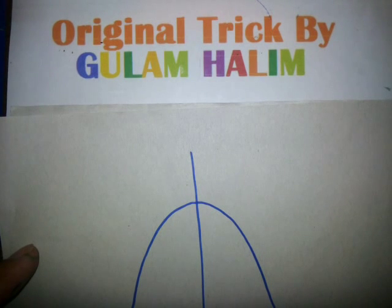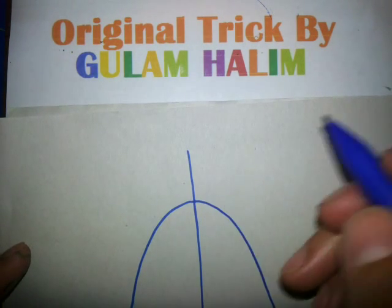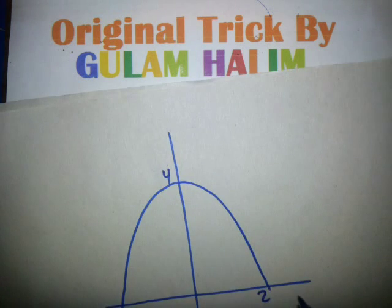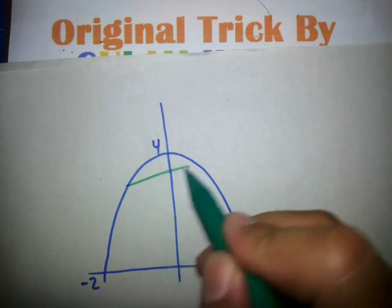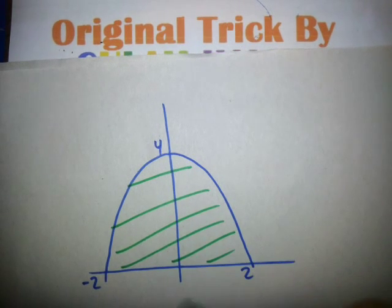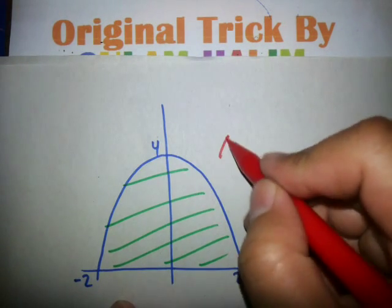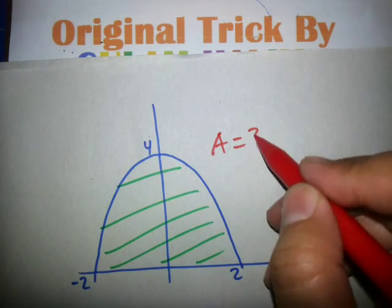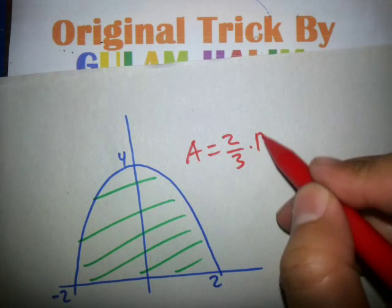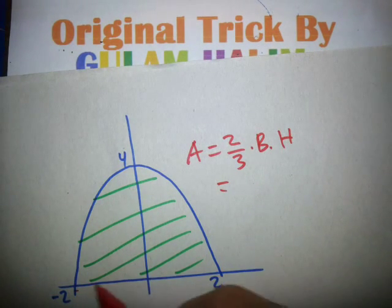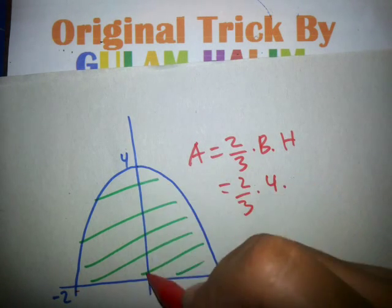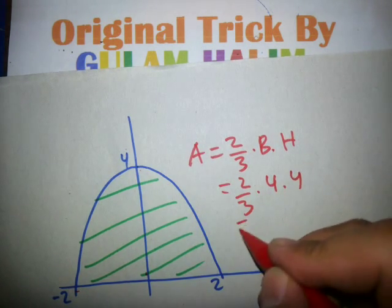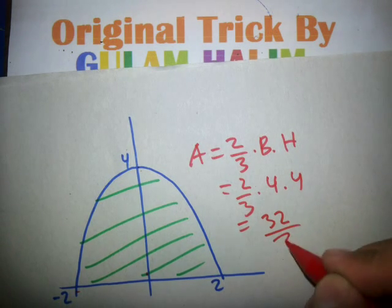You can use another example. Here, minus 2 to 2, so the base equals 4, height equals 4. Using the same formula: 2/3 times base times height equals 2/3 times 4 times 4 equals 32/3.